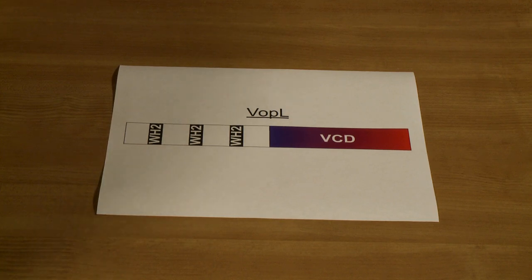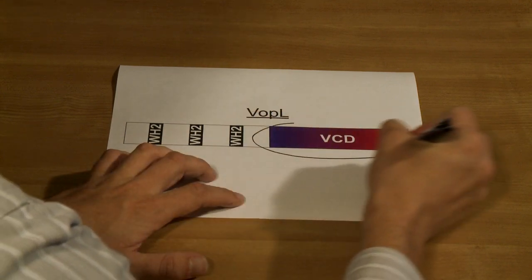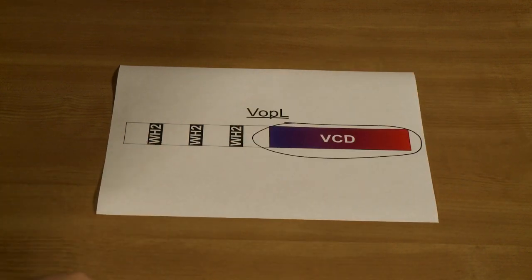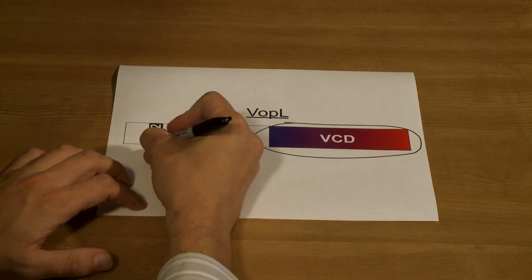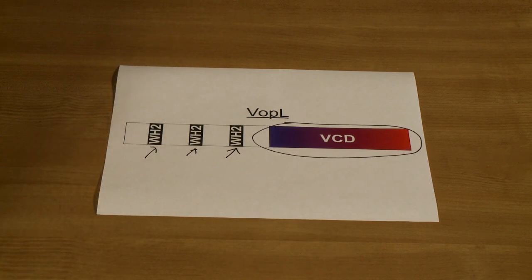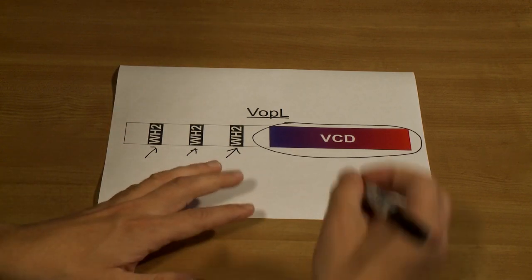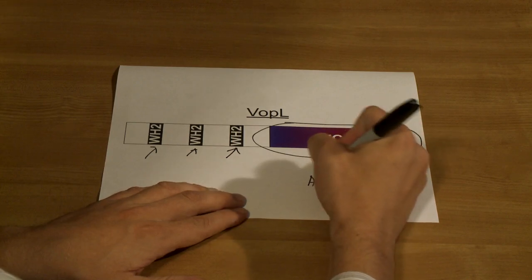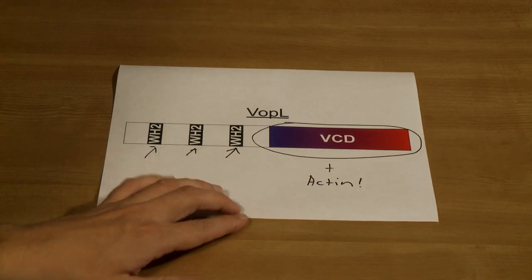The bacterial pathogen Vibrio parahemolyticus produces a molecule called VapL that nucleates actin filaments in infected eukaryotic cells. VapL was discovered here at UT Southwestern by our colleague Kim Orth. VapL has a C-terminal domain that we call the VCD that nucleates actin filaments on its own. Adjacent to the VCD is a tandem array of actin binding WH2 motifs that greatly enhance VapL's activity. In order to understand how this molecule nucleates actin filaments, we sought to solve the crystal structure of the VCD in complex with actin.